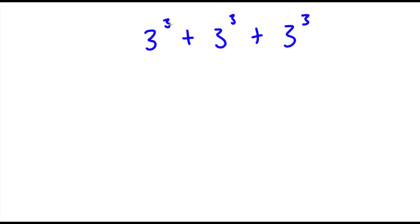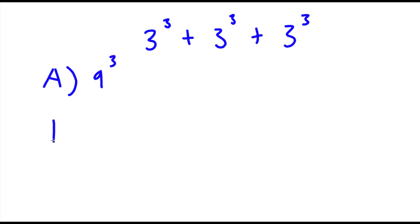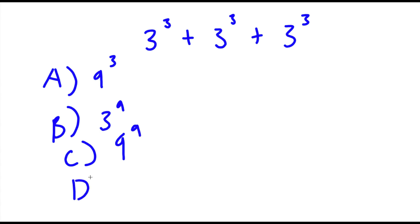So we have 3 to the power of 3 plus 3 to the power of 3 plus 3 to the power of 3. I have four answer choices for this problem. For A I have 9 to the power of 3. For B I have 3 to the power of 9. For C I have 9 to the power of 9, and for D I have 3 to the power of 4.